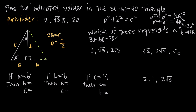Let's apply that to a couple of examples. In this first question, we're dealing with this triangle and we've been told that A equals 6 — in other words, the length of the shortest side is 6. So what are B and C? Well, if we use this relationship, we know A is equal to 6, and B is the longer side.